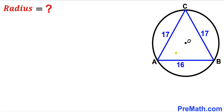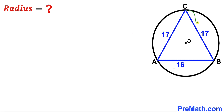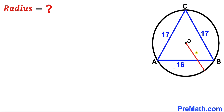Welcome to PreMath. In this video we have an isosceles triangle ABC fully inscribed in a circle with center O, such that side length AC is 17 units, side length BC is 17 units as well, and side length AB is 16 units. Our task is to calculate the radius of this circle.